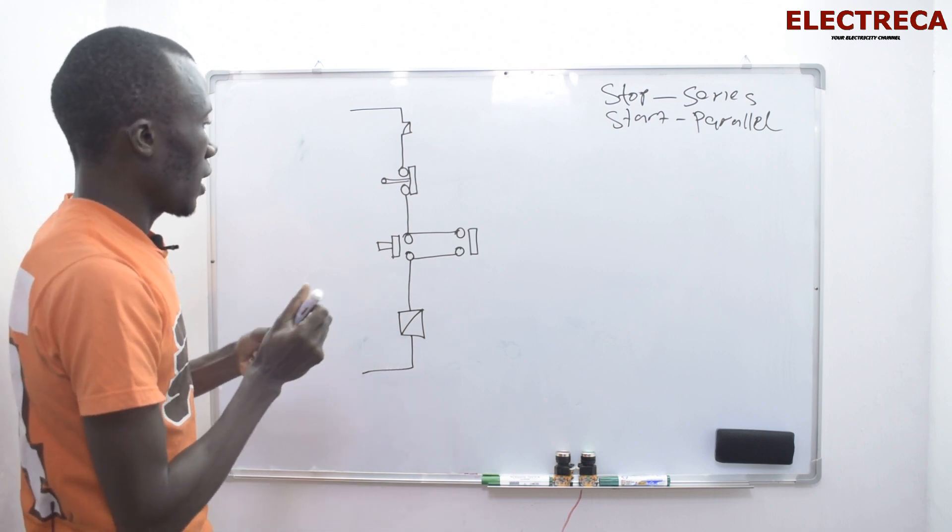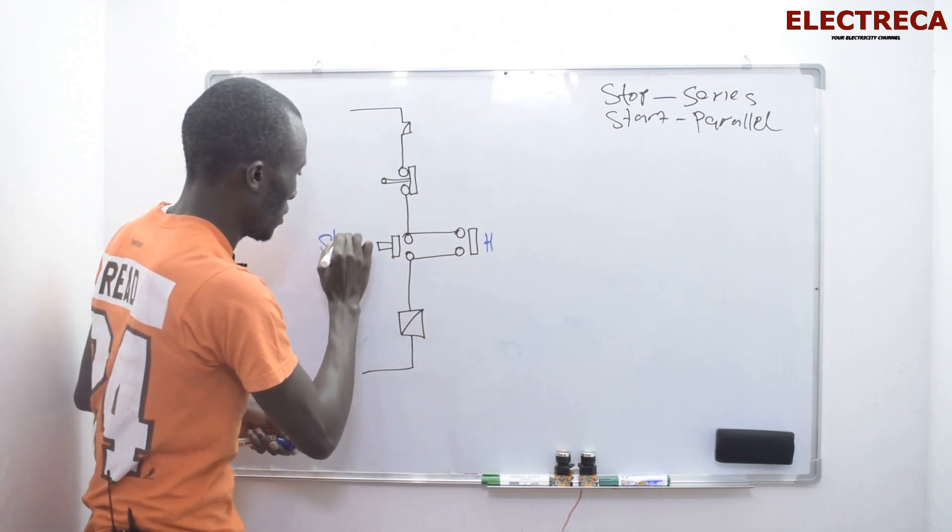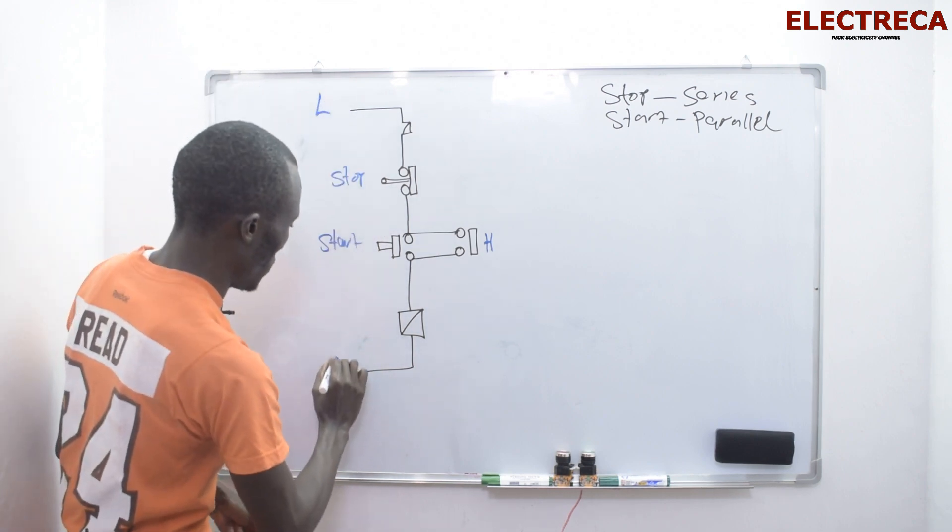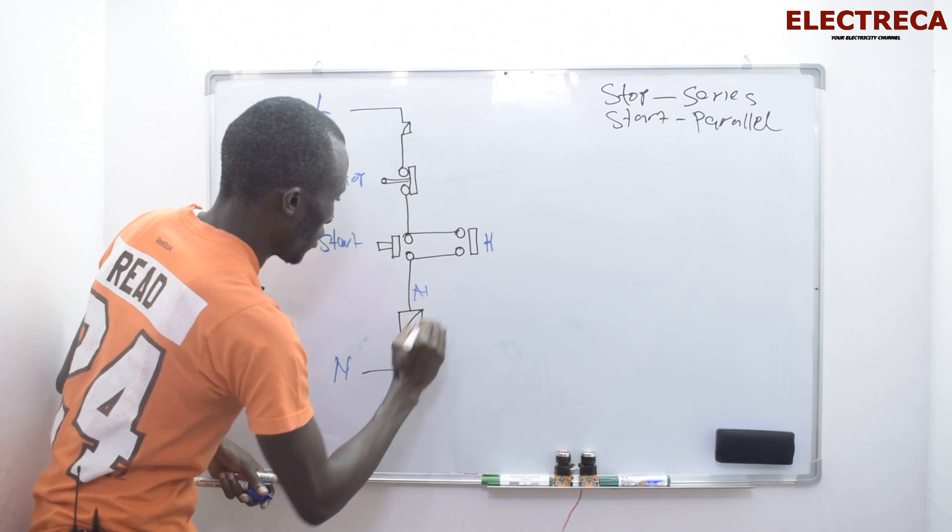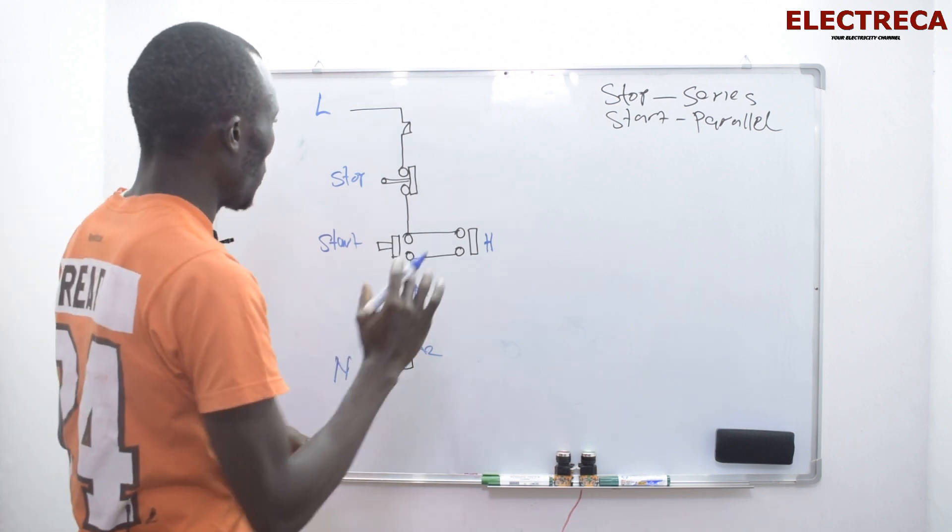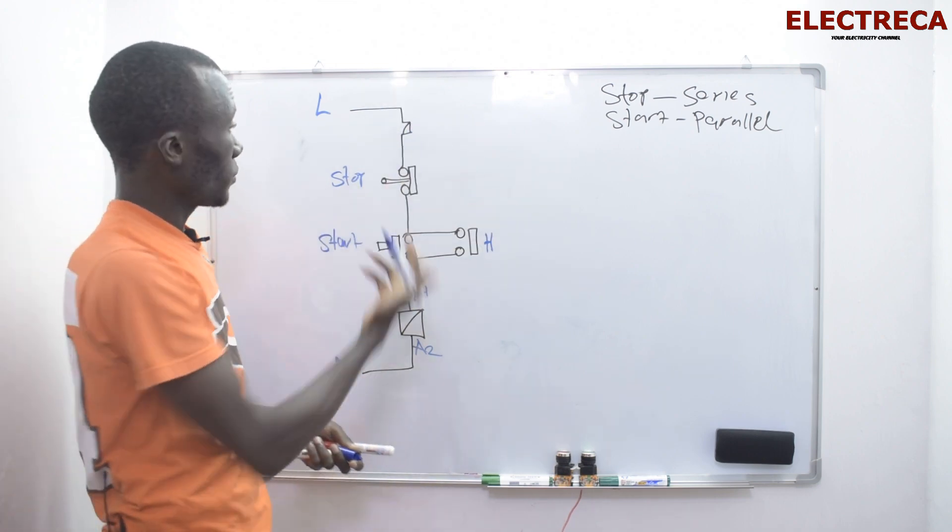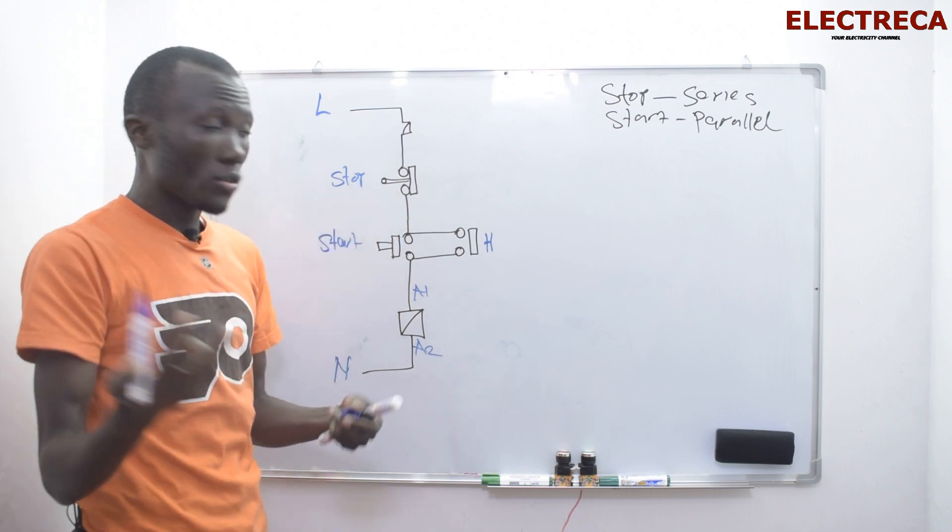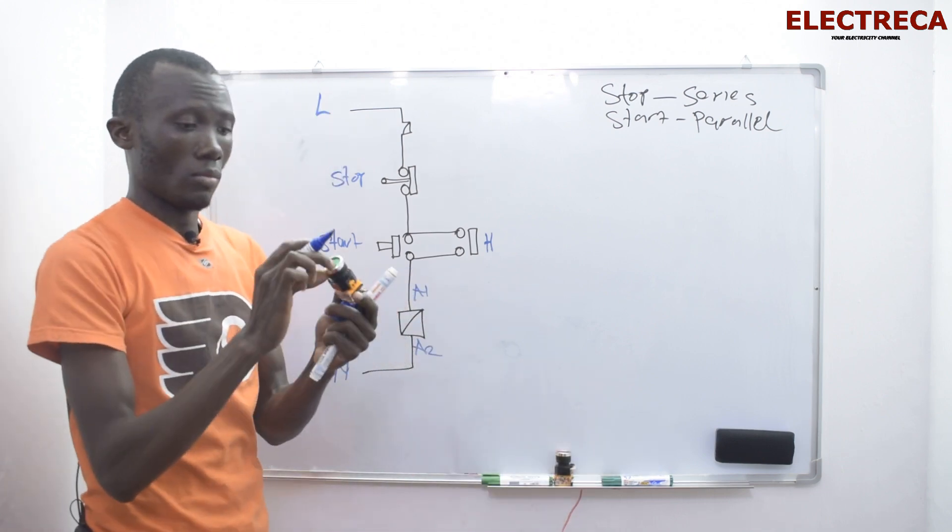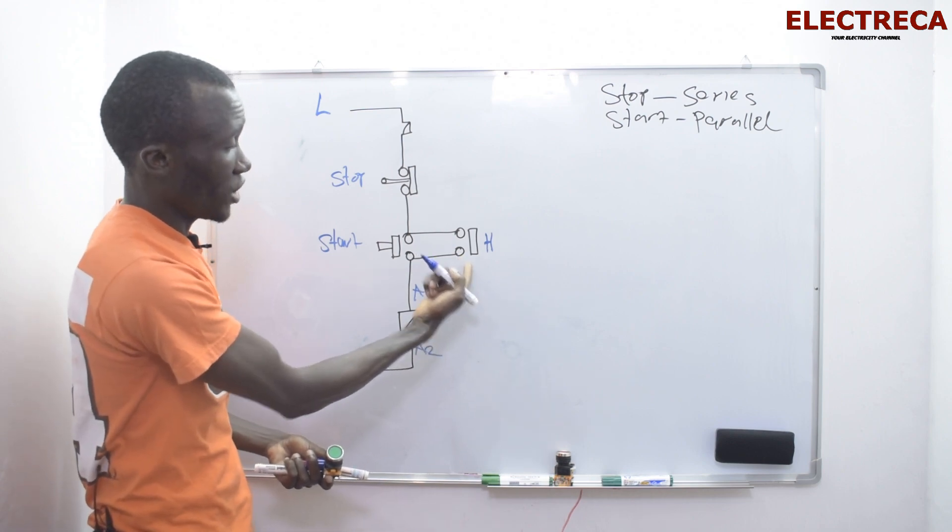And now since it is a self-holding circuit, so this is H the hold, you have your start here and then you have stop, this is your L and then this is N, you have A1 of the coil and you have A2 of the coil. All right, now this is your circuit. You know very well that you have L here goes through the overload relay, through stop button which is normally closed. Now our current pends here. When you press this button here, definitely our coil will get energized and will close the contact H here, and anything connected there will work.